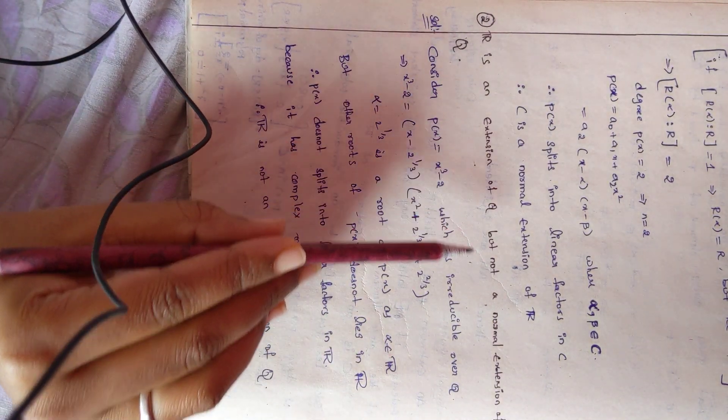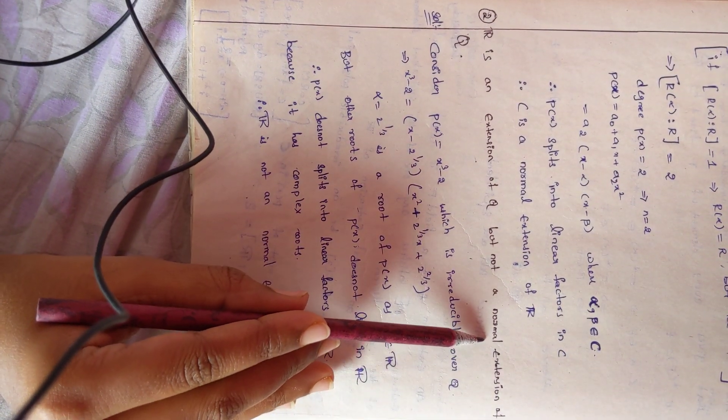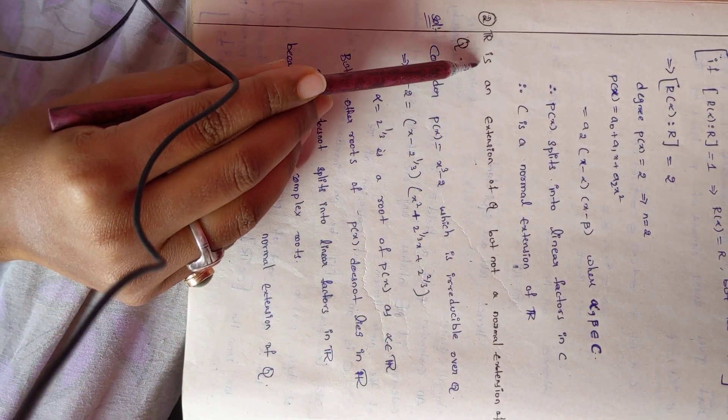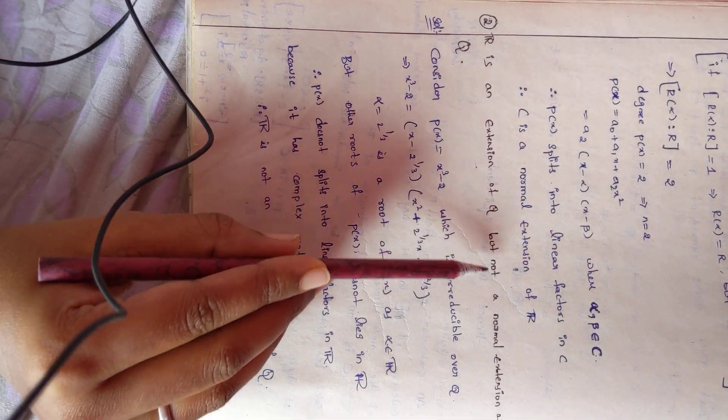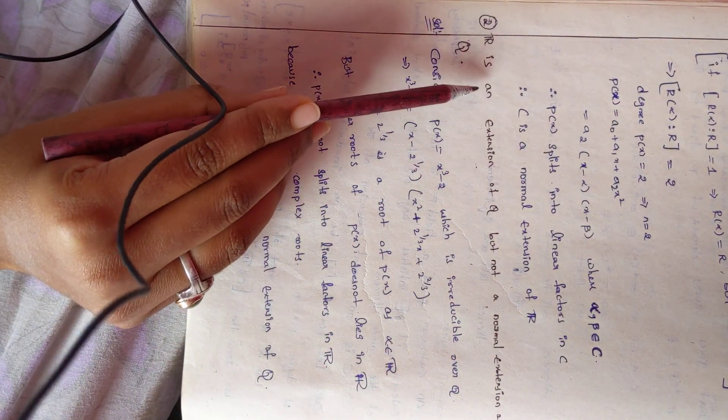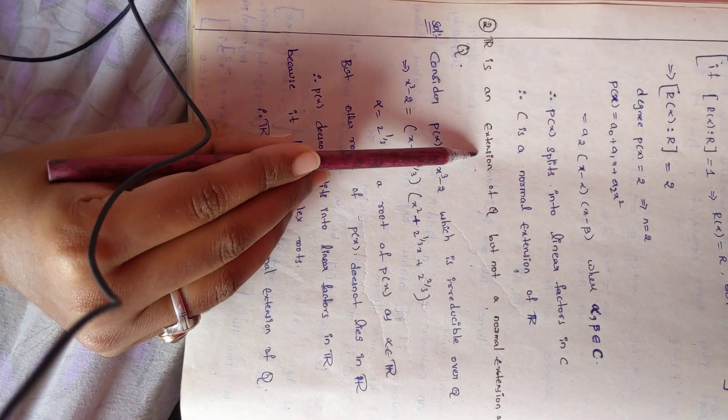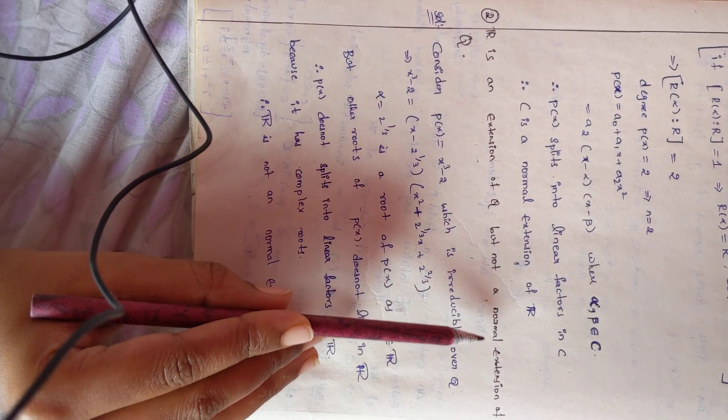Here we are going to see an example which need not be a normal extension. Given R is an extension of Q but not a normal extension of Q.